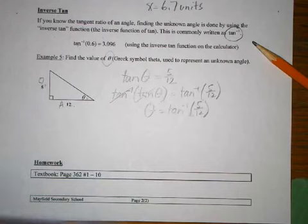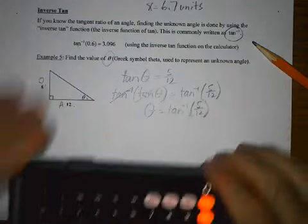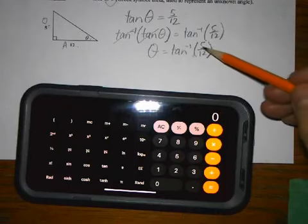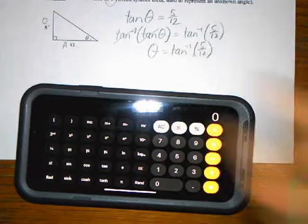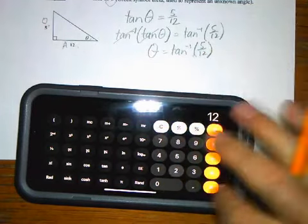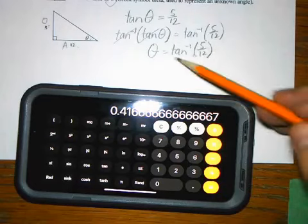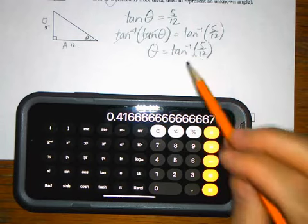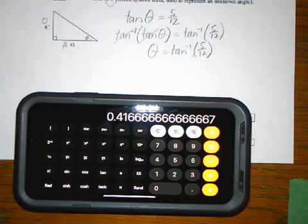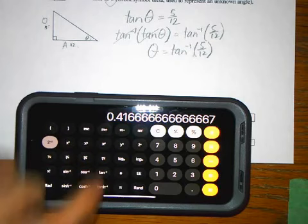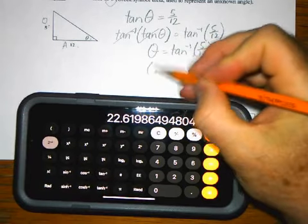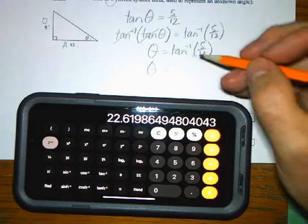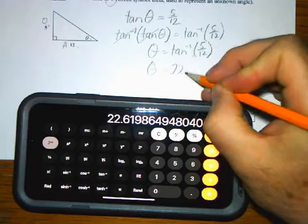On the calculator: first do 5 ÷ 12, then press second function and tan inverse to get the result. Rounded to the nearest tenth of a degree: θ = 22.6°.